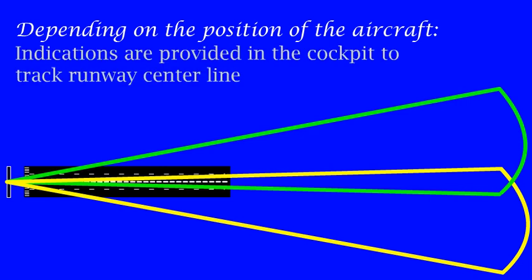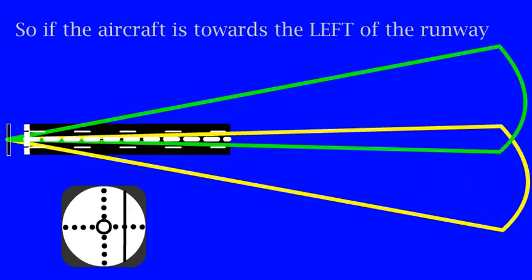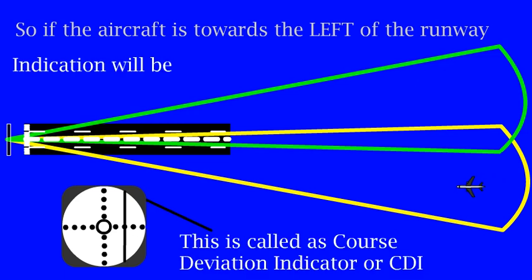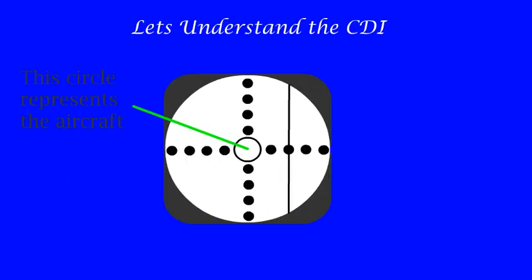Depending on the position of the aircraft, indications are given in the cockpit. So if the aircraft is towards the left of the runway, indications will be like this on the course deviation indicator or the CDI. The circle on the CDI represents the aircraft.